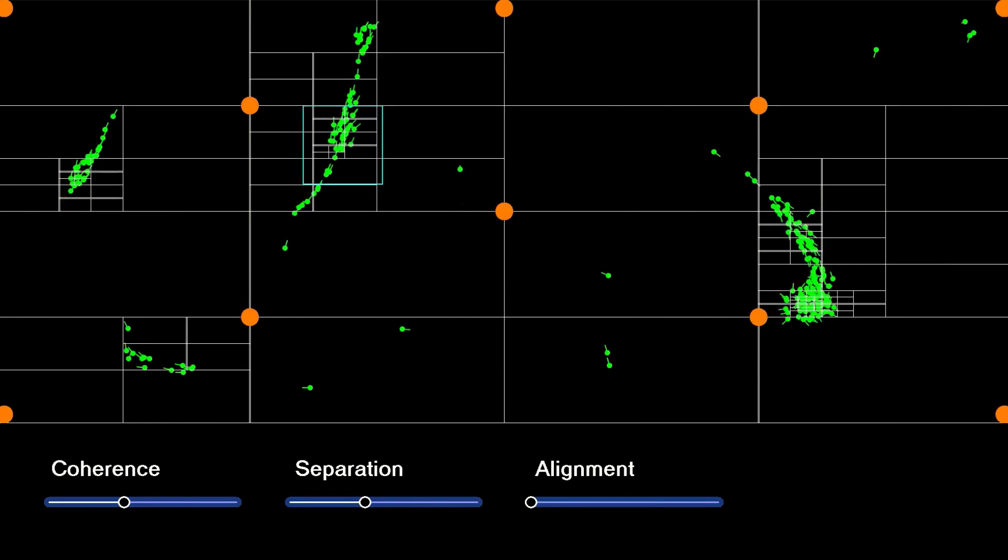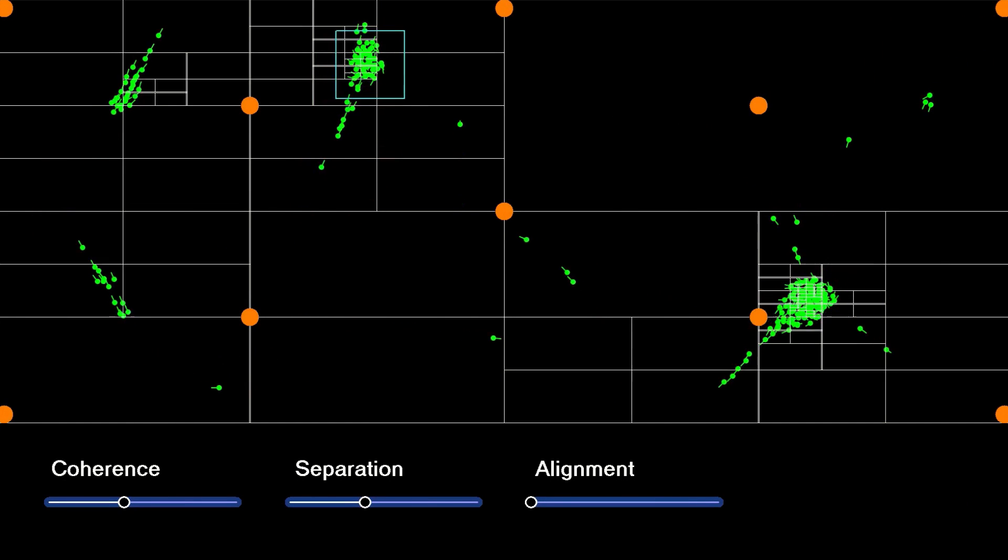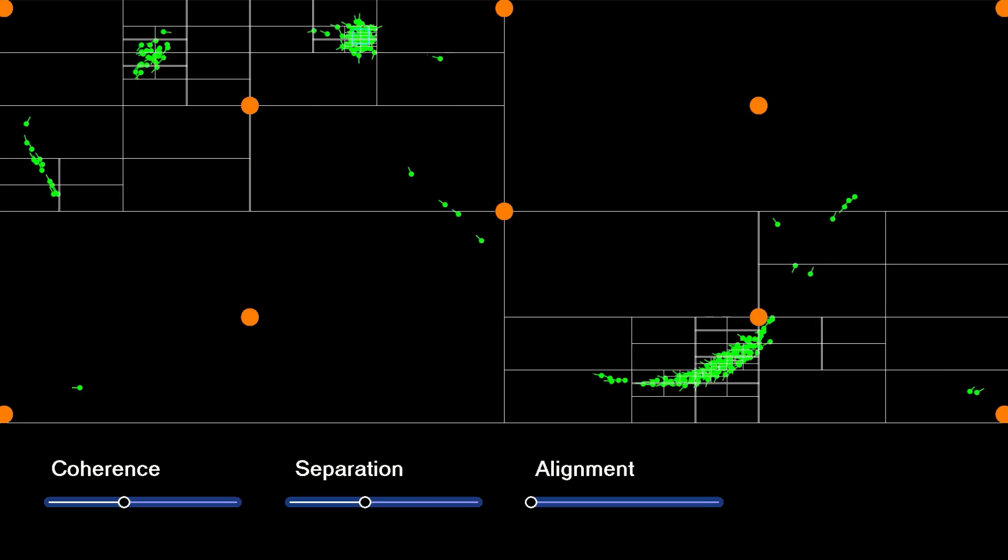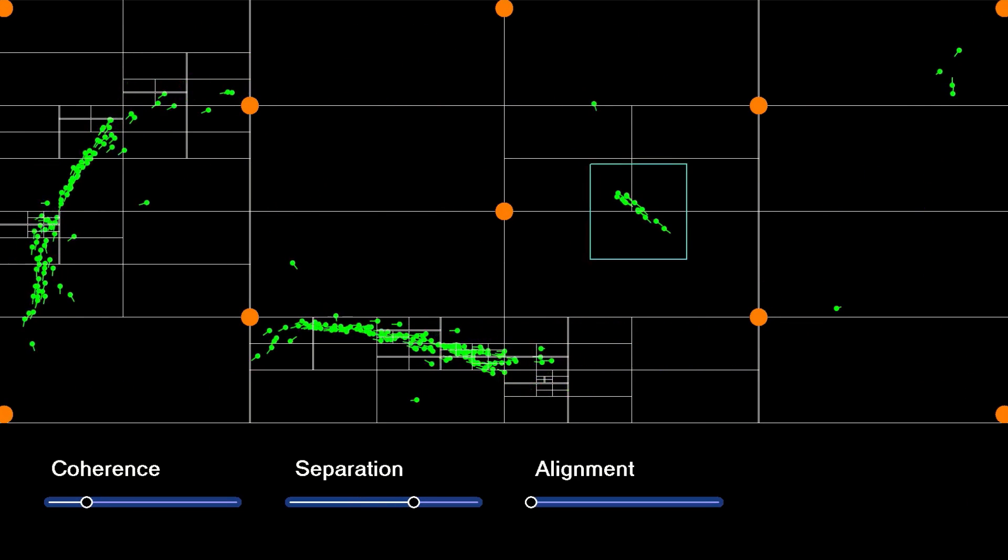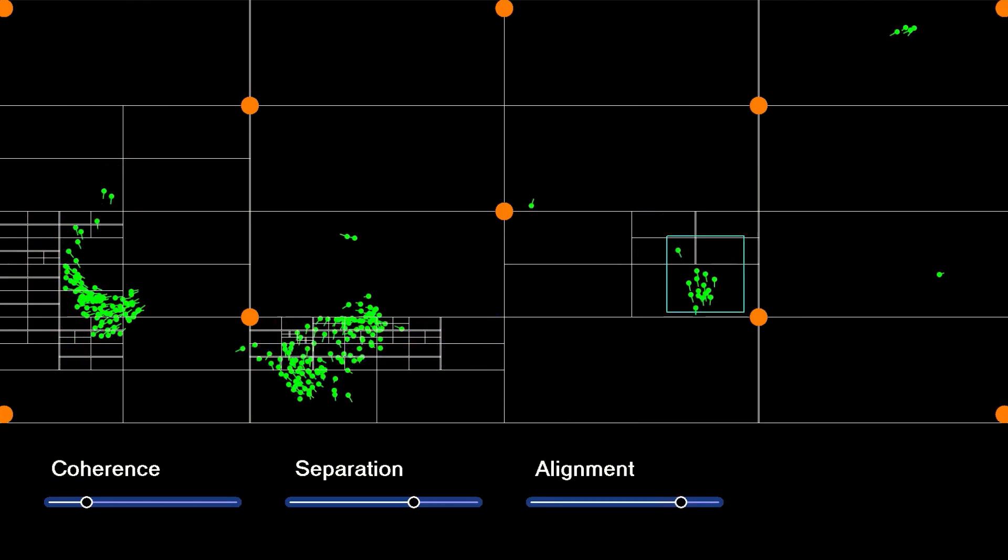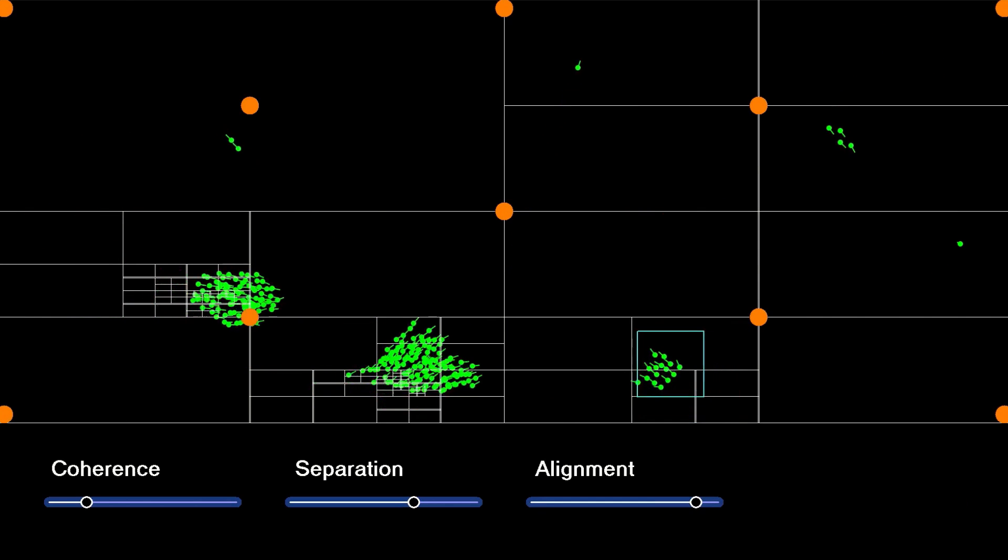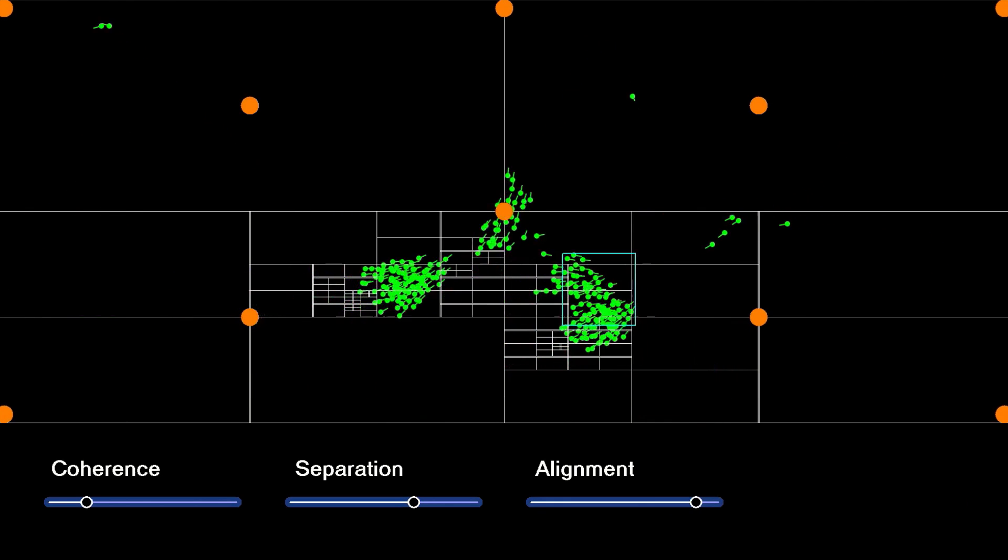Of course, as our boids are moving all the time, we need to populate the quad tree with their new positions on a regular basis. Failure to do so would mean the boids would never know where their neighbors are, but how often do we need to update it? Ideally, we'd do it every frame, but as we're going for speed, there's always a trade-off.